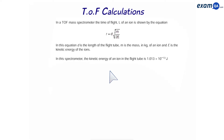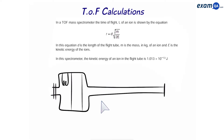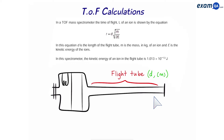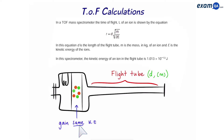Moving on to the next part — here's where time of flight questions can get a bit tricky. Before we attempt the question, let's quickly visualize what's going on in a time of flight spectrometer. This is an oversimplification of the machine. This is the flight tube, which is the longest part of the machine, and sometimes we're asked to calculate the length of the tube. We have particles or isotopes of different elements in the machine.